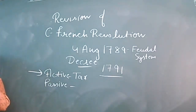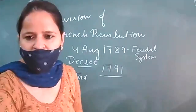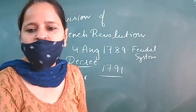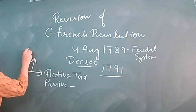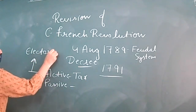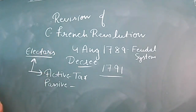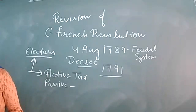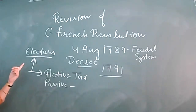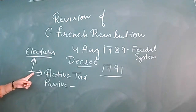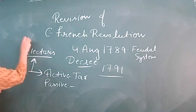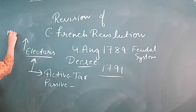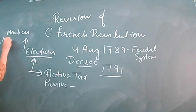Are active citizens direct members of parliament? No. Active citizens will vote for electors, and electors could vote for members of the National Assembly.